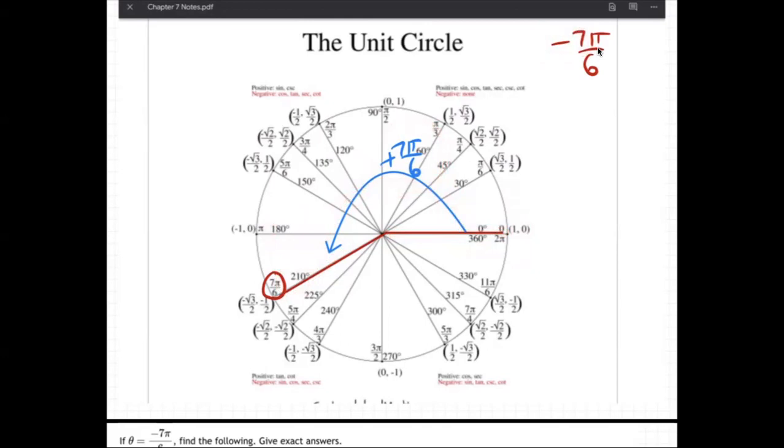So how do you do negative? Well, you just do the same thing in the opposite direction. In other words, if starting at zero, positive 7 by 6 means you go up and up, how far up? Halfway around, and then one more line.